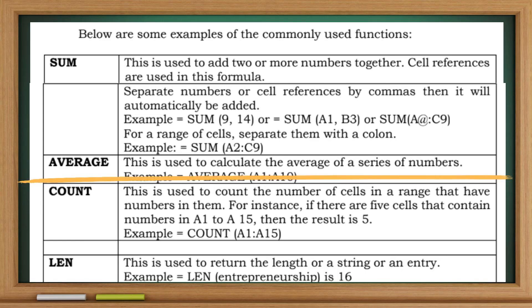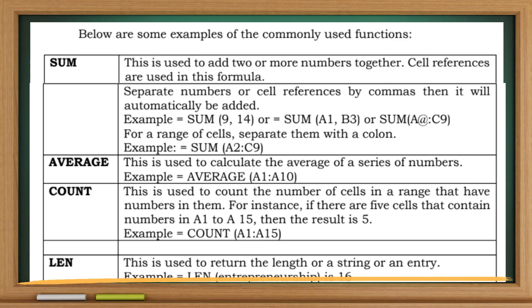AVERAGE: This is used to calculate the average of a series of numbers. COUNT: This is used to count the number of cells in a range that have numbers in them. LEN: This is used to return the length of a string or an entry.